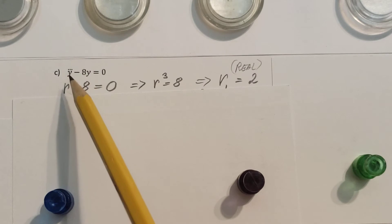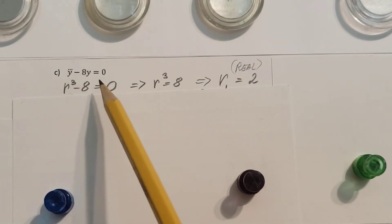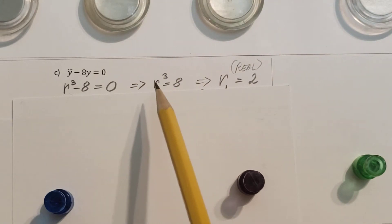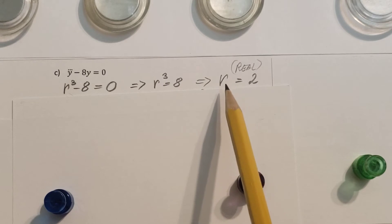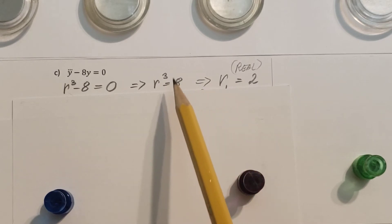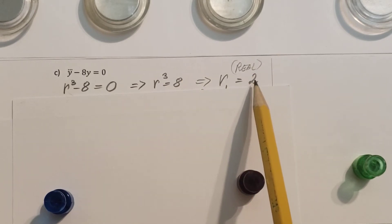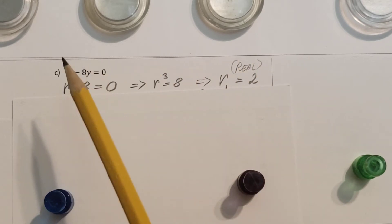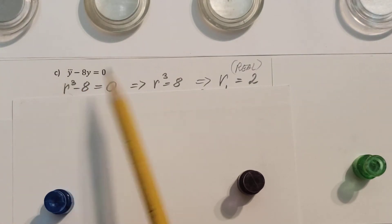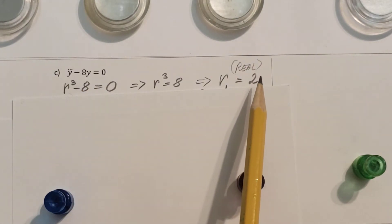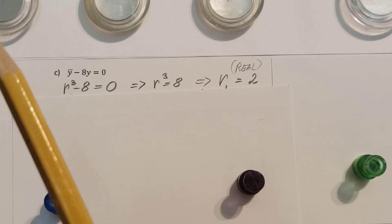So r cubed minus 8 equals 0. Now this will give us r to the third power equal 8, and that's going to give us r1. Cube root 8 is going to be 2, right? So that's a real number, but this is a polynomial of degree 3, so we only have one root. That means there's two more hiding somewhere.